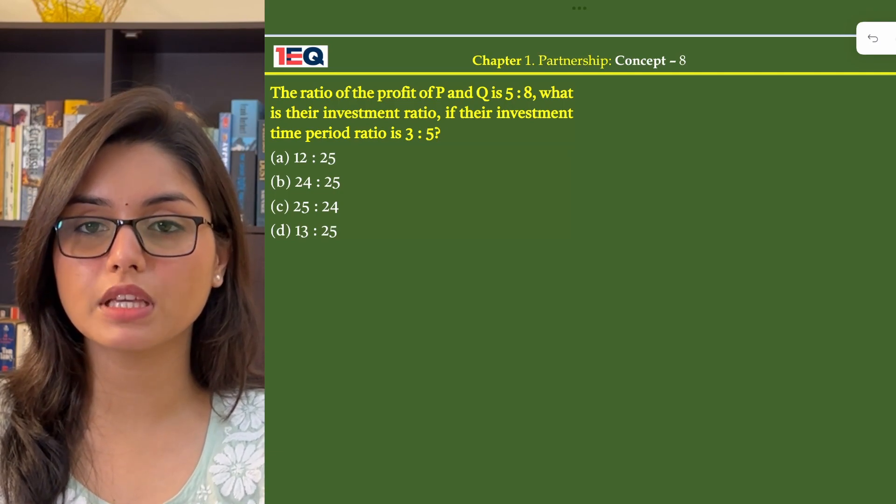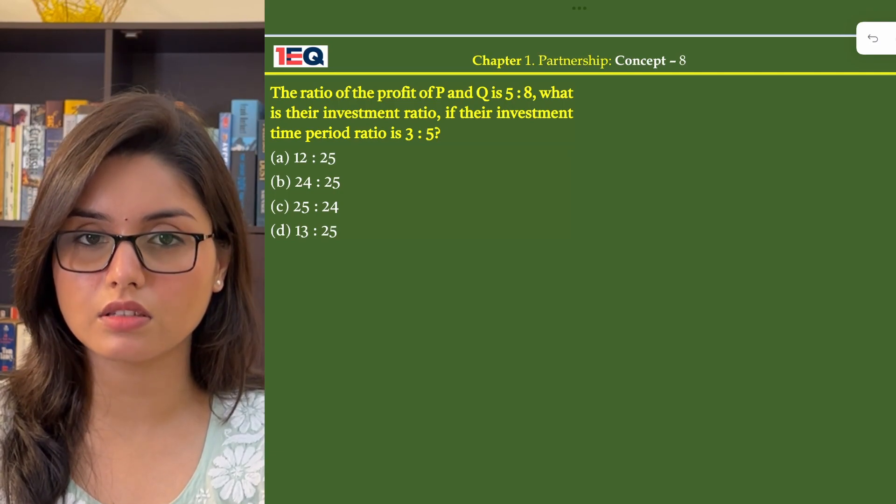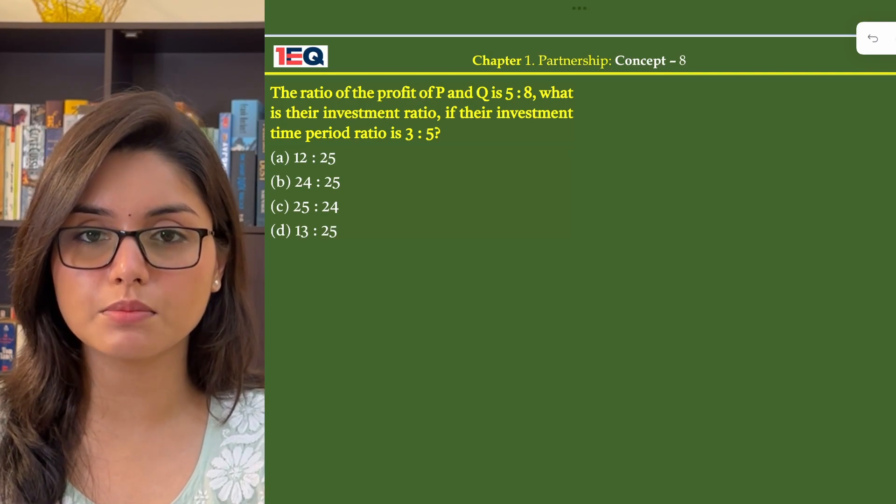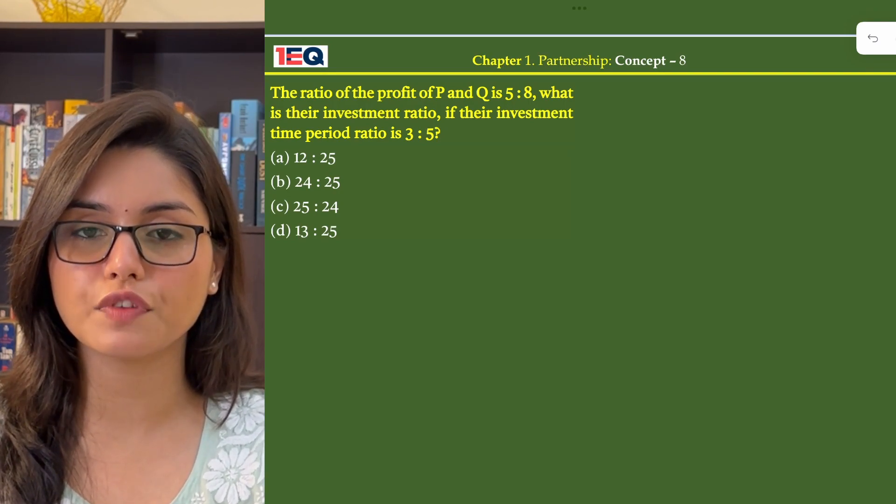The ratio of the profit of P and Q is 5 is to 8. What is their investment ratio if their investment time period ratio is 3 is to 5?